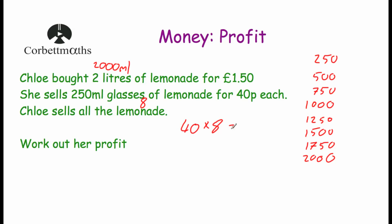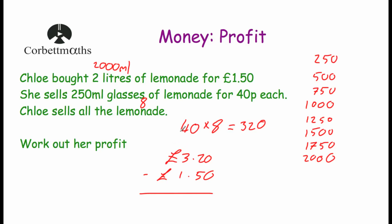40 multiplied by 8: 4 times 8 is 32, so 40 times 8 is 320. So Chloe made £3.20 from selling the lemonade. She bought the lemonade for £1.50, so if we subtract £1.50: 0 take away 0 is 0, 2 take away 5 — let's borrow, so that gives us 12, 12 take away 5 is 7, and 2 take away 1 is 1. So Chloe made £1.70 — that's her profit.